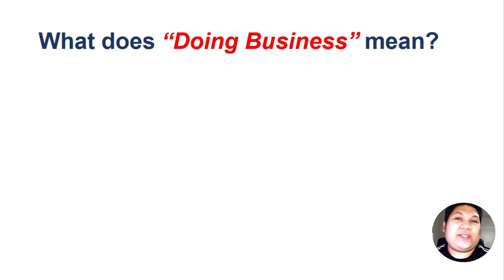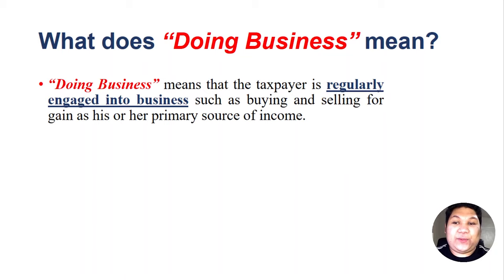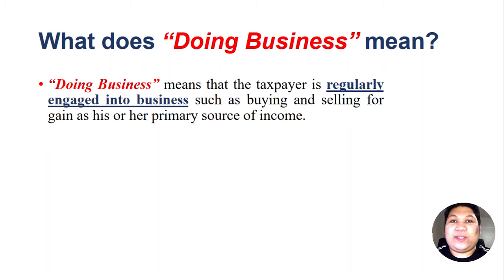Before we start our discussion, let's define what doing business means. Doing business means that a taxpayer is regularly engaged in business such as buying and selling for gains as his or her primary source of income. When we say doing business, the taxpayer is engaged in buying and selling or producing goods which can be commercially available for final consumers.